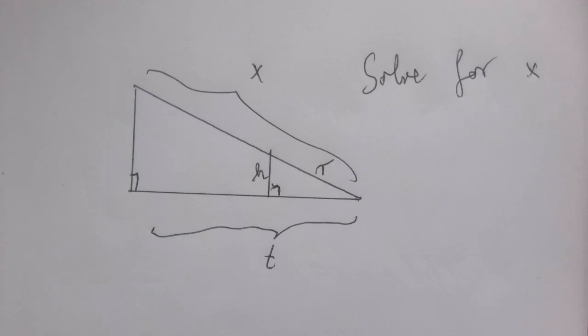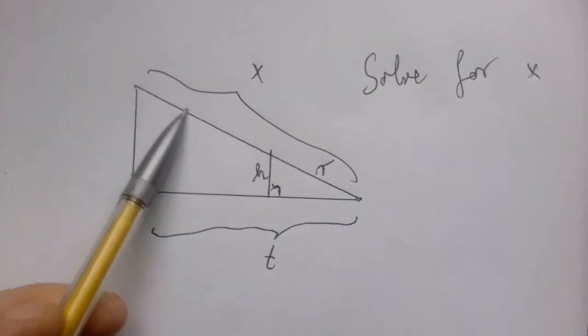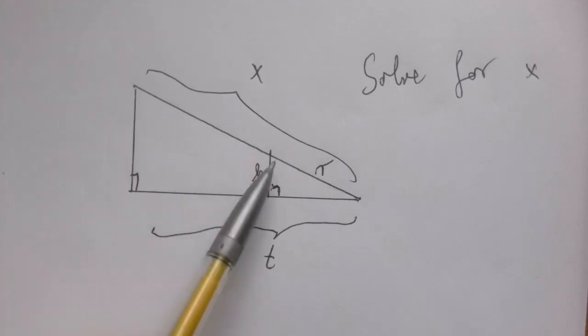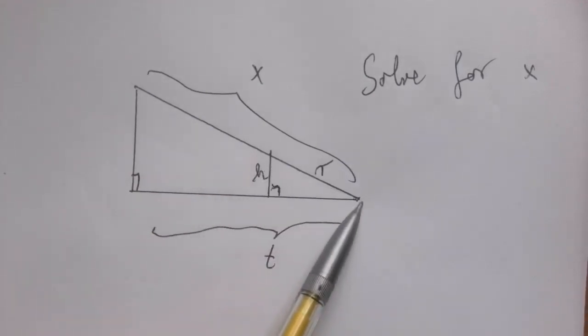So this problem is similar to the previous one with a little bit of extra complication. What is the complication? So if we have to solve for X, then we are going to use the same sort of ratios as we did before, but X is the hypotenuse of the big one, and R is the hypotenuse of the small one. So far so good.